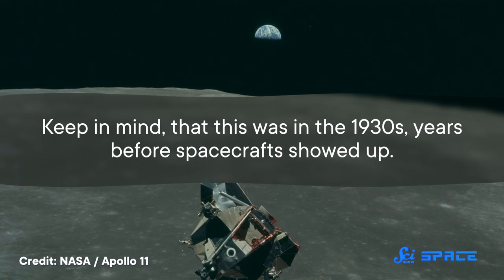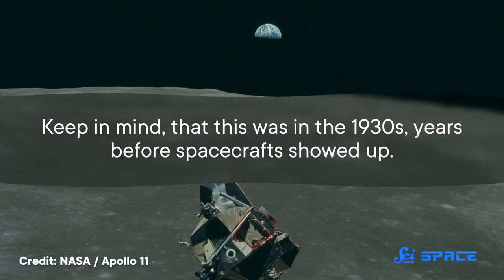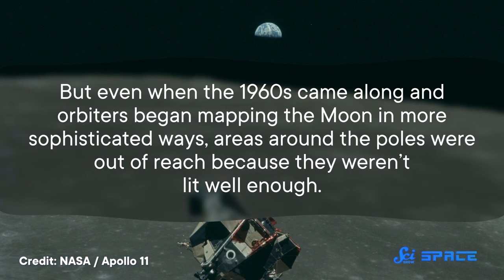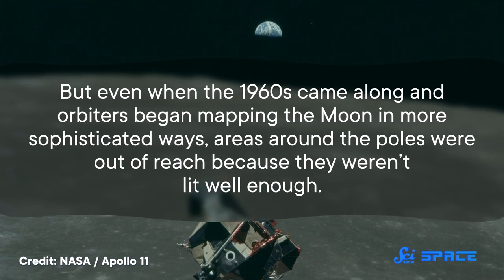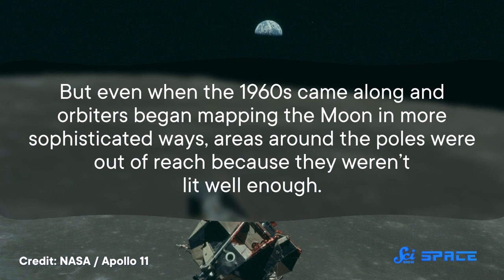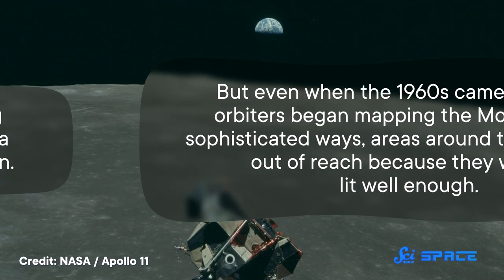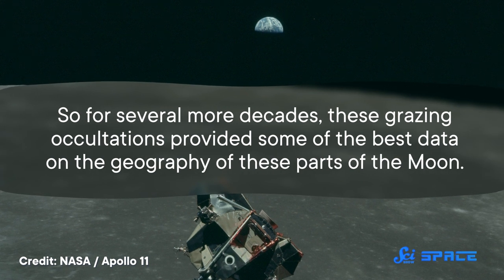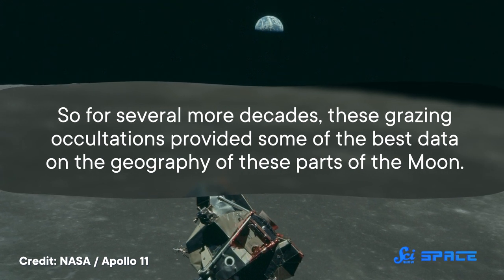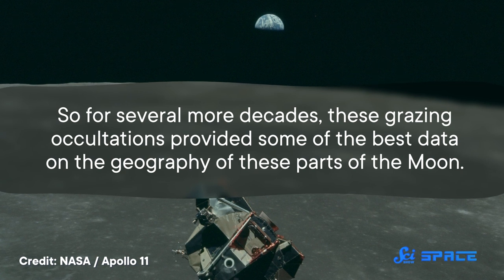Keep in mind that this was in the 1930s, years before spacecraft showed up. But even when the 1960s came along and orbiters began mapping the Moon in more sophisticated ways, areas around the poles were out of reach because they weren't lit well enough. So for several more decades, these grazing occultations provided some of the best data on the geography of these parts of the Moon.